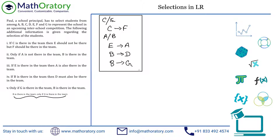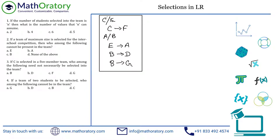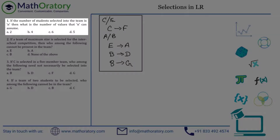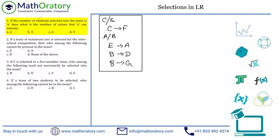Now that we've collected everything visually, let's get into the questions and I'll show you how to solve them without looking at the statements again. Question number one says: if the number of students selected into the team is N, what is the number of values that N can assume? Basically, what could be the team size, and how many different team sizes are possible? Let's go one by one. Let's think about whether N equal to one is possible — can we have a team of size one?